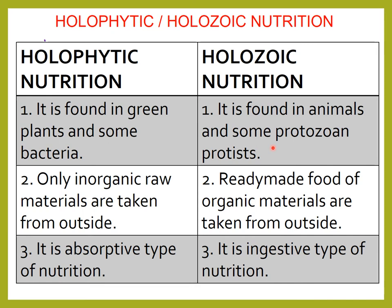Examples: amoeba, paramecium, euglena, trypanosoma, etc. — all have holozoic nutrition. They depend on other organisms for their nutrition.